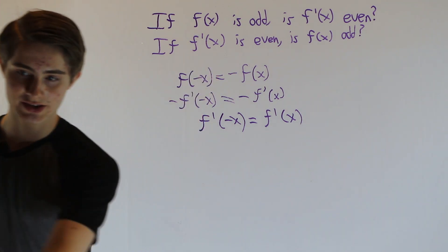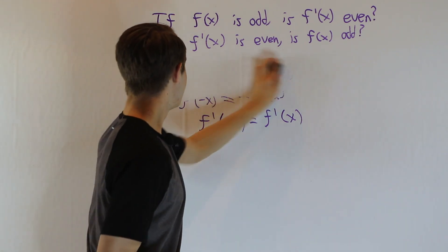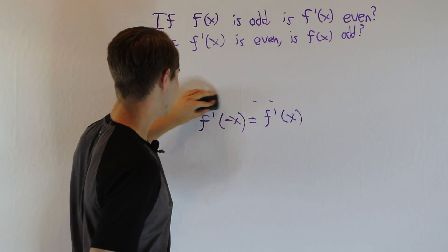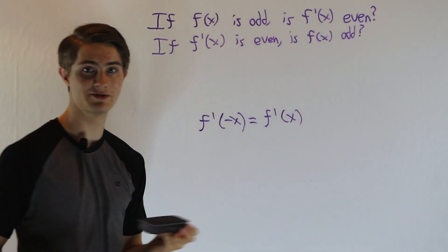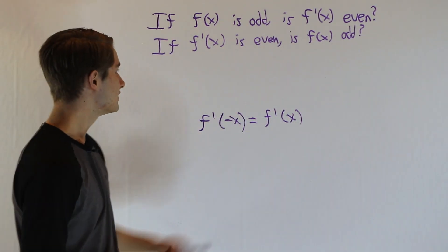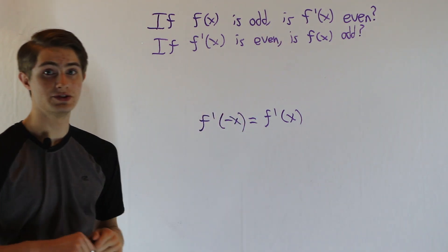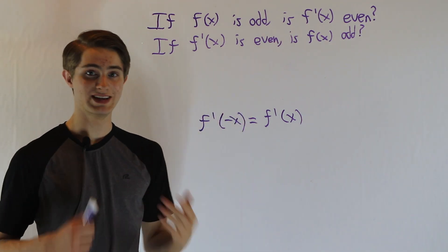Now let's take a look at the second statement. If we know that f prime of negative x is f prime of x, so f prime of x is even, what does that say about f of x? Well, in order to do that, we're going to have to go backwards with an integral.